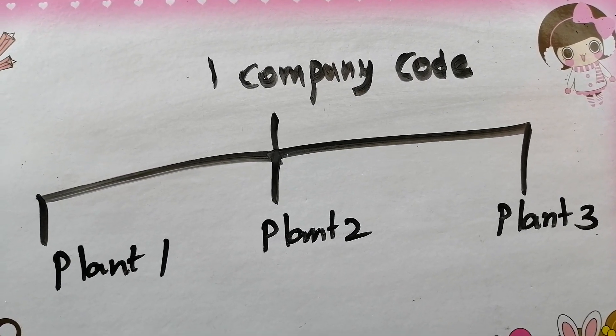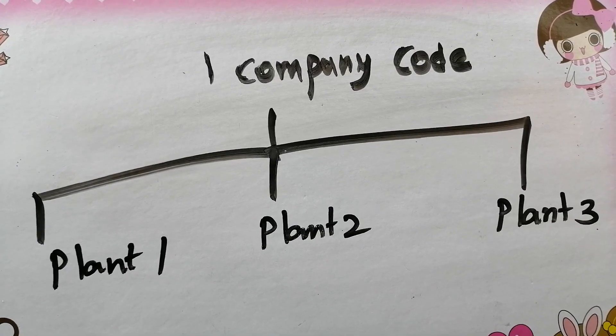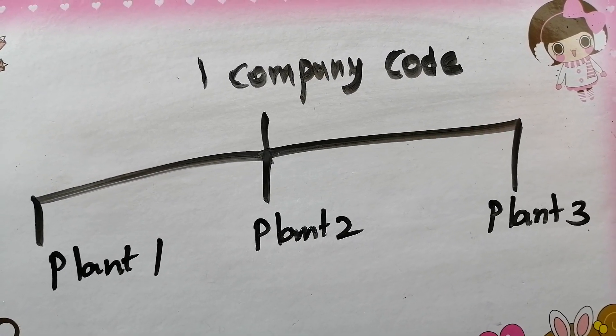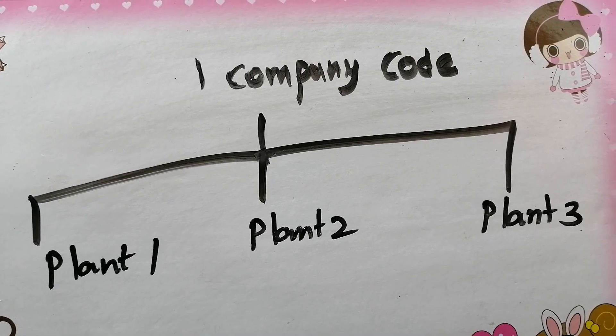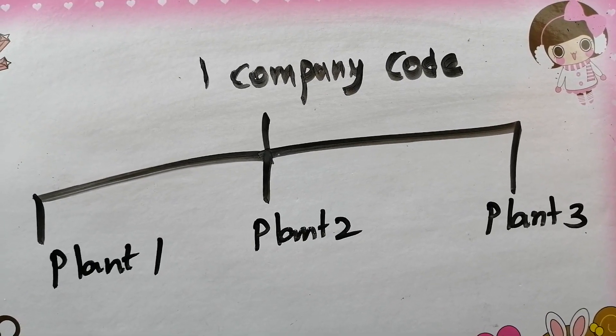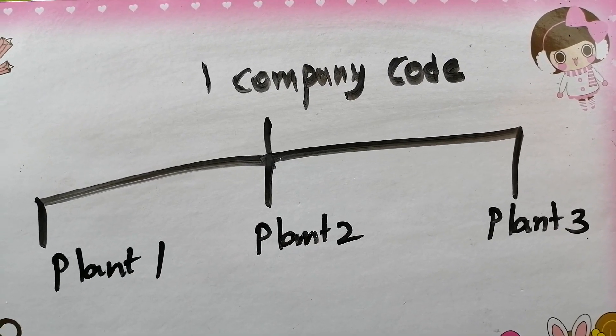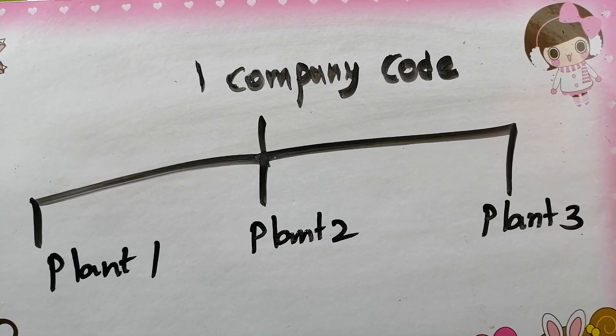How to manage it in this situation? Should the valuation area be maintained at company code level or plant level? Just answer for this business scenario - valuation area at company code level or plant level?